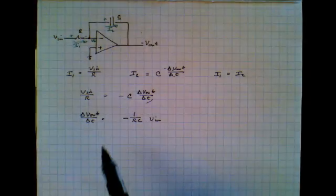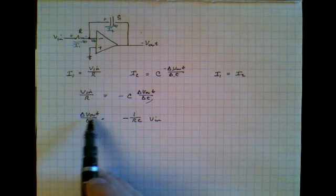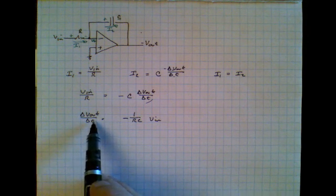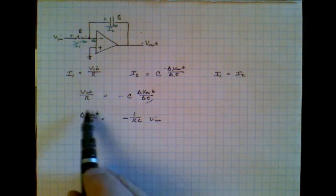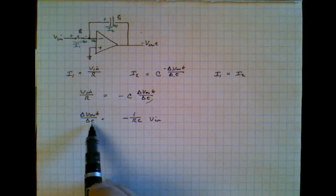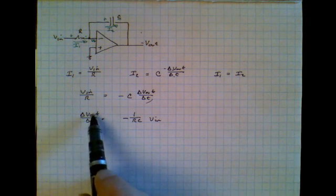Now the question is how do we find Vout? Because we know what delta Vout divided by delta T is. Well, the way that we find what Vout is, is we do the opposite of this function. So if this was a log, we'd take the anti-log. Well, this is a derivative. A derivative is a change over a change.